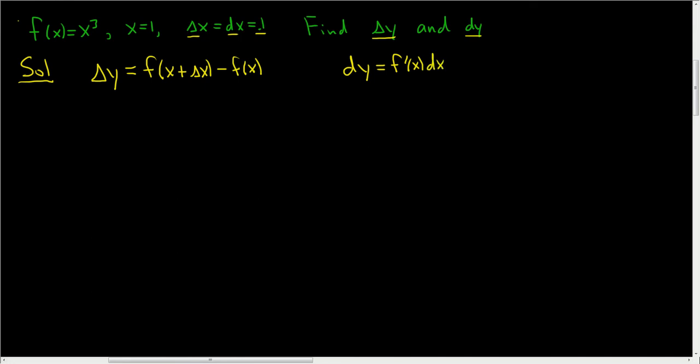Okay, let's do this problem. So delta y is equal to f of x. x is equal to 1, so it's 1 plus delta x, but that's 0.1, so 1 plus 0.1, minus f of x, but again, x is 1. So this is equal to f of 1.1 minus f of 1.